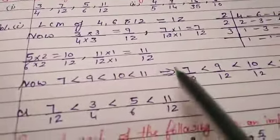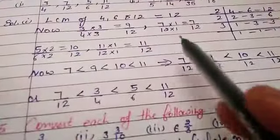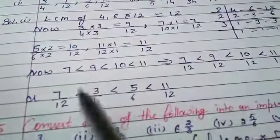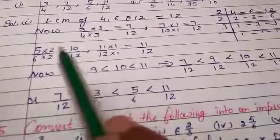Now compare the numerators: 7, 9, 10, and 11. So 7/12 < 9/12 < 10/12 < 11/12. Converting back to original fractions: 7/12 less than 3/4, less than 5/6, less than 11/12.